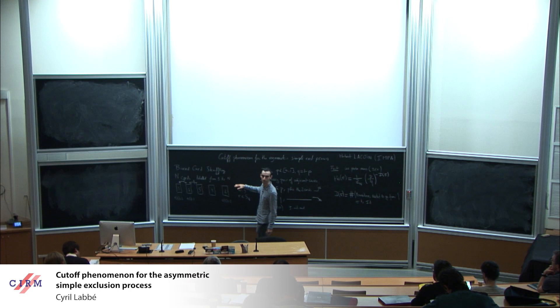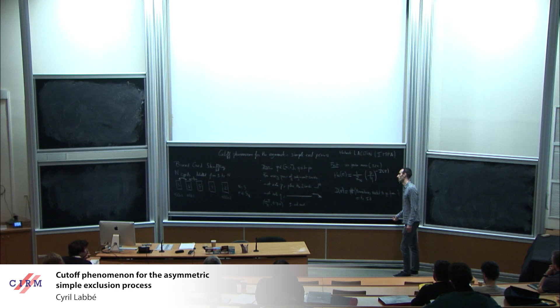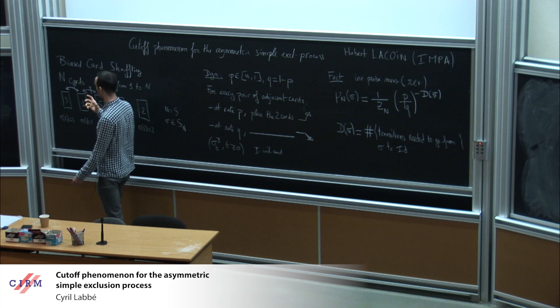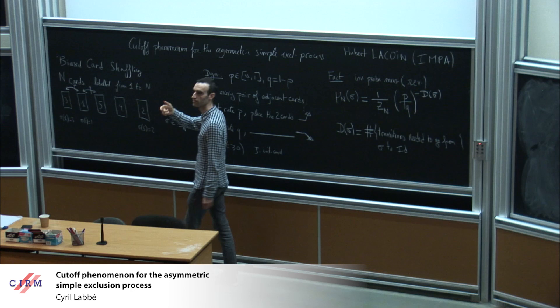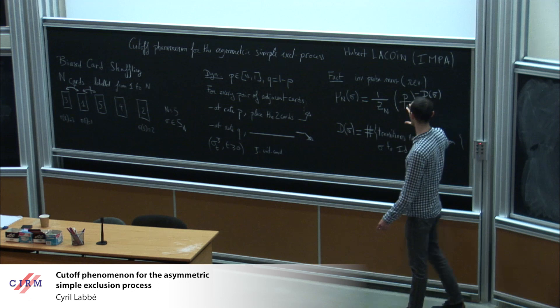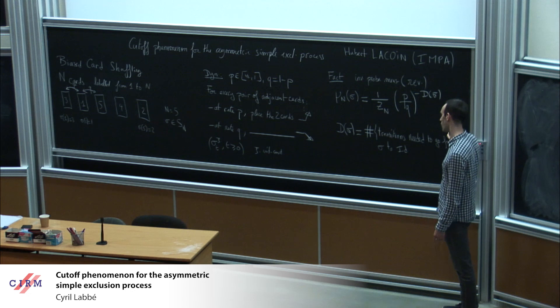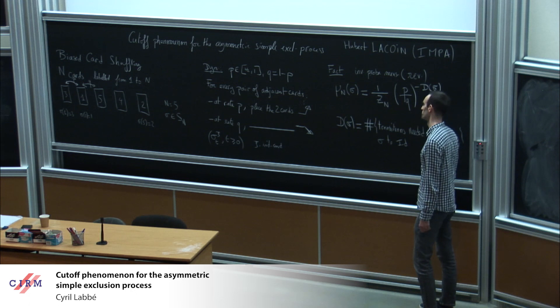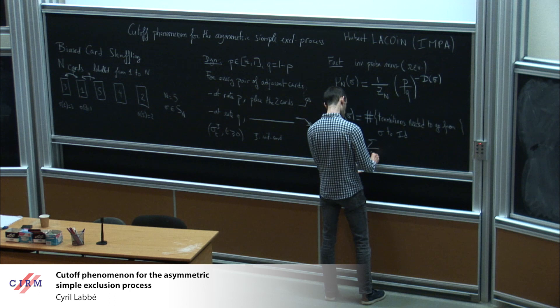This is simple to check because you just need to verify that the detailed balance condition is satisfied. For every two adjacent configurations, you go from one to the other at rate p and back at rate q. Any transition either moves one step away from the identity or closer to it, so d(sigma) increases or decreases by one.